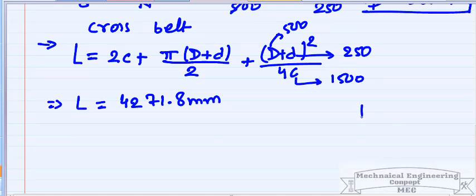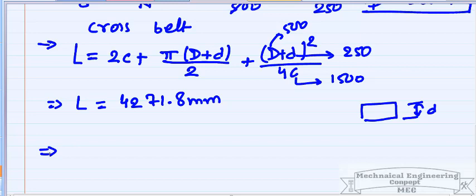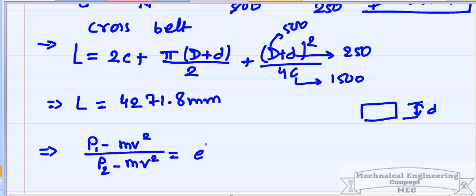After calculating length, we need the width of the belt. We use two formulas: the tension ratio (P1 − mv²)/(P2 − mv²) = e^(f·α), where α is the wrap angle in radians, f is the coefficient of friction, v is belt velocity, and m is mass per meter length; and the power formula: P (kW) = (P1 − P2) × v / 1000.